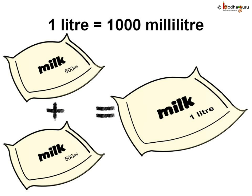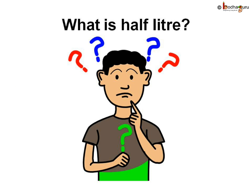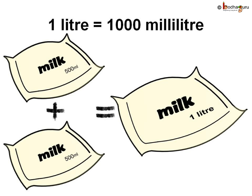1 litre is equal to 1000 ml. At home, we ask the milkman to give a fixed quantity of milk like 1 litre, 2 litres, or half a litre. Half a litre means 500 ml, since 1 litre equals 1000 ml and 500 ml is half of 1 litre. Some people use the term half litre instead of 500 ml.